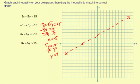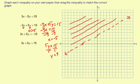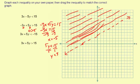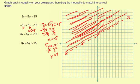Now the test point: substitute 0 for x and 0 for y. We get 0 greater than 15 — that is not true. So that means the point (0, 0) and all the other points in that half-plane are not solutions. The solutions are up here on the other side, and that's the part we shade in. That's the graph of negative 3x plus 5y is greater than 15.